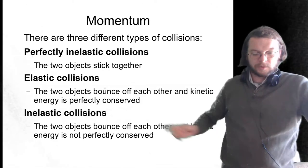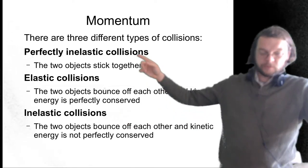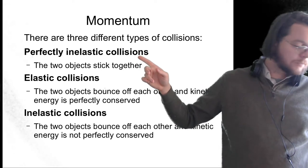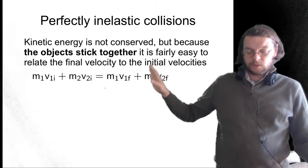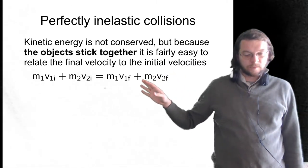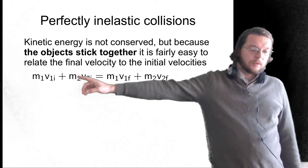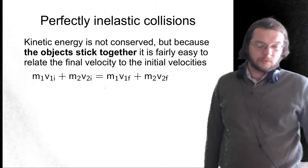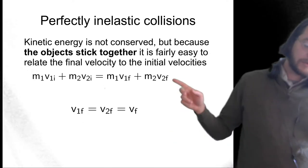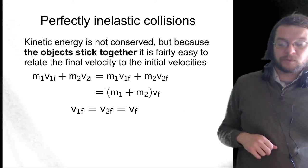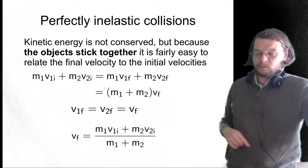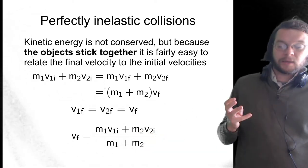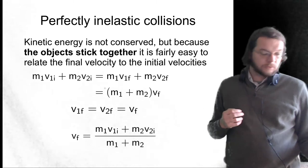Now I want to talk about perfectly inelastic collisions for a second, specifically about kinetic energy. This slide is from last time: there are two objects that stick together. The momentum of object one plus the momentum of object two equals the combined momentum after the collision. Because they stick together, the final speeds are the same, so the equation simplifies nicely and we can solve for VF by dividing both sides by M1 plus M2. What I want to show is that this implies we are losing kinetic energy through the collision when objects stick together.